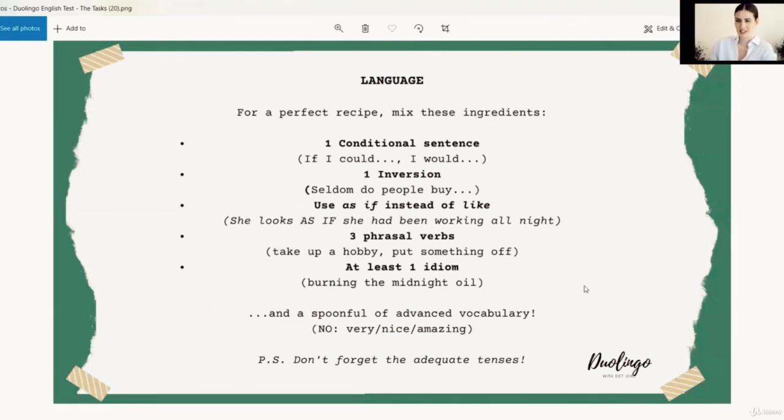Finally, the language. This is the recipe that I've mentioned, and these are the ingredients. So one conditional sentence, hopefully, preferably at least two, a second and the third conditional. Then the inversion. Seldom do people, rarely do people, had I known, et cetera. One inversion, more than enough. Use as if instead of like, obviously in those situations when you can, because they're not absolute synonyms. She looks as if she had been working all night, that would be the example from the elderly lady at the sewing machine that we had. And when it comes to the examples, the phrasal verbs that I used there were take up a hobby and put something off. And the idiom that I used was burning the midnight oil. Obviously, you can use more. You can use two idioms or you can use five phrasal verbs, but be sure they're adequate.